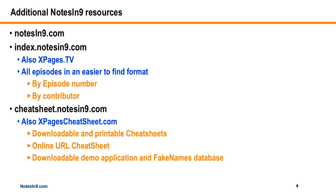Don't use IE because it doesn't work — there's a scope variables issue I haven't gotten back to yet. I also have cheatsheet.notes9.com, which has some downloadable and printable cheat sheets: the URL cheat sheet, a demo application, and fake names. I've not updated that demo application yet for some of the new Java stuff from a previous show, but that is on my agenda.